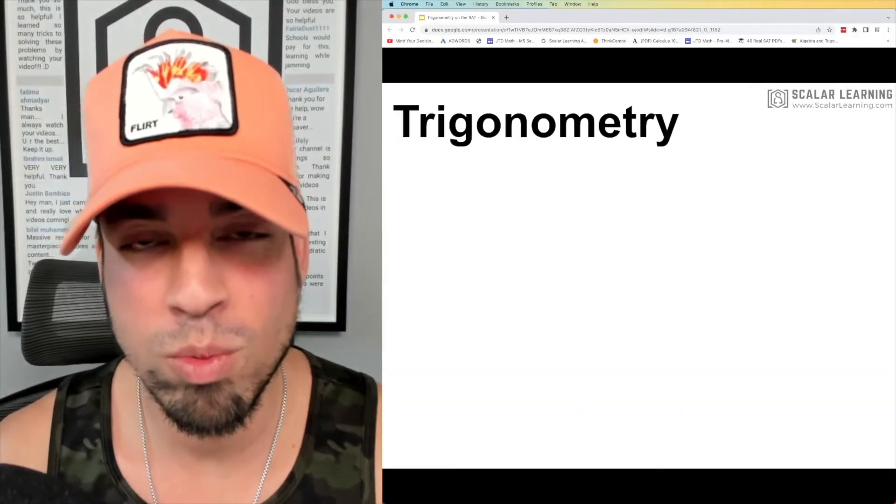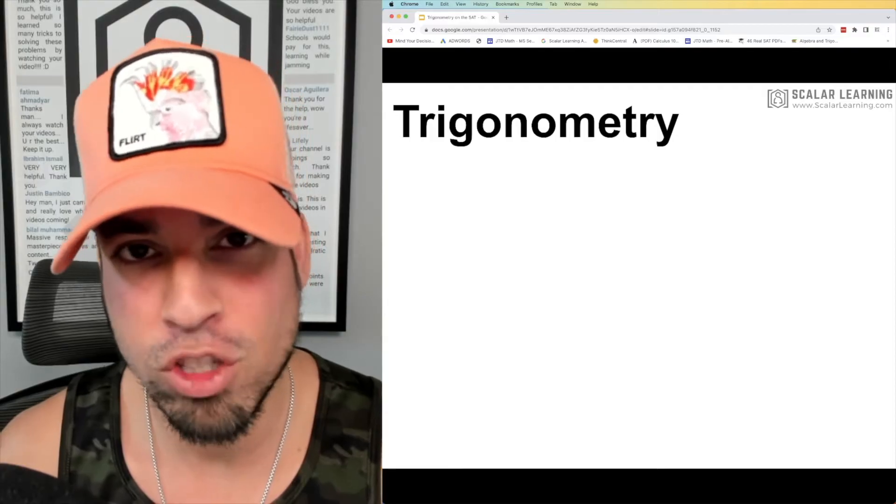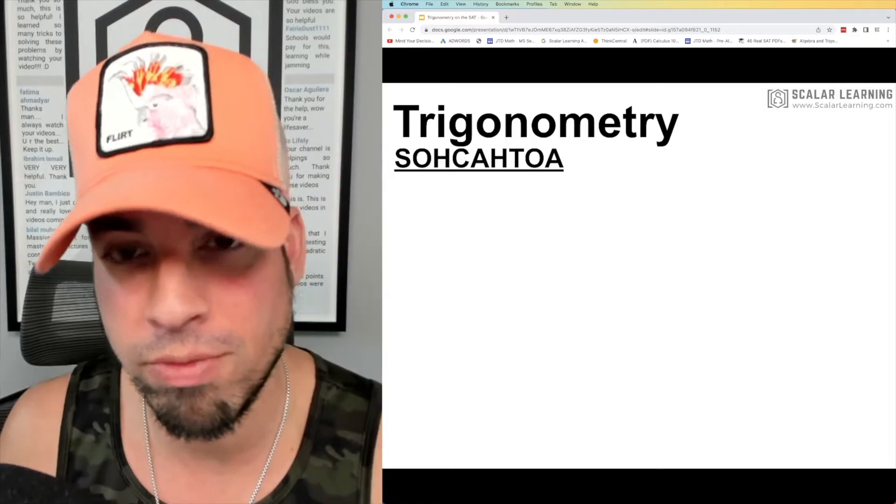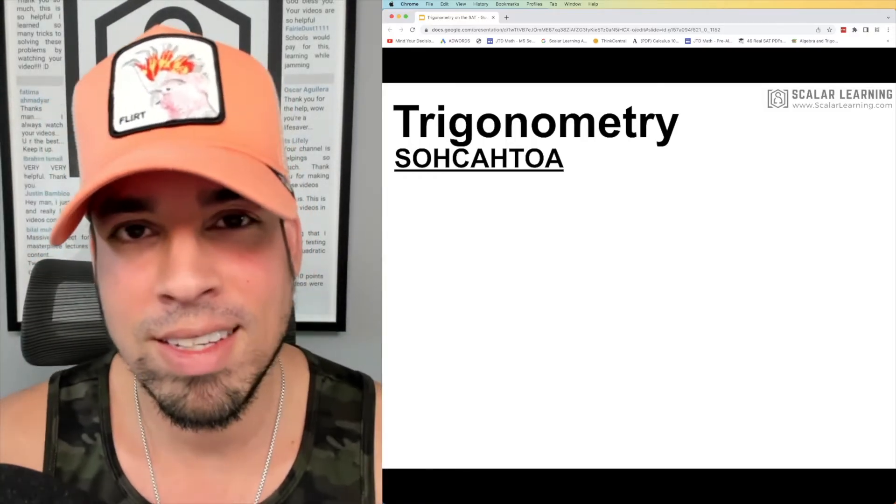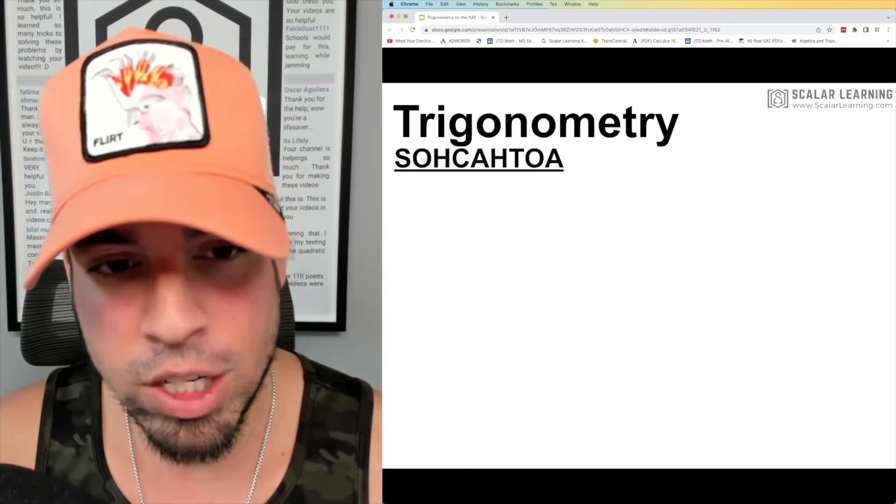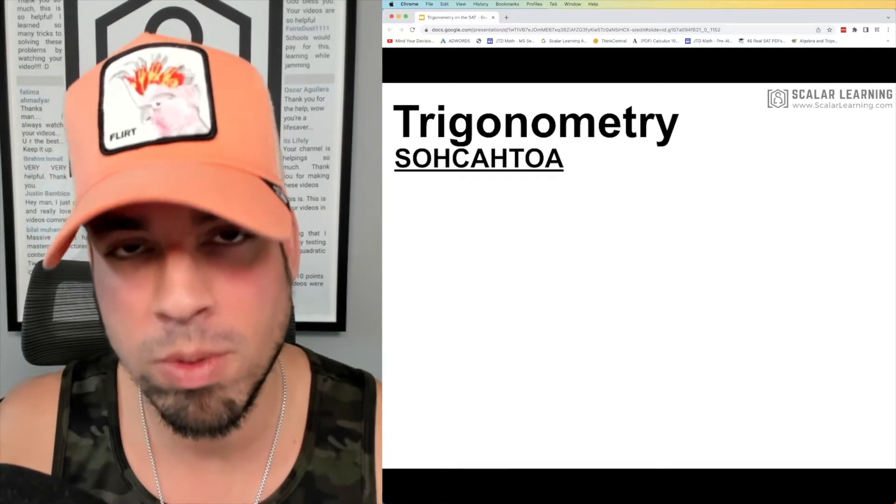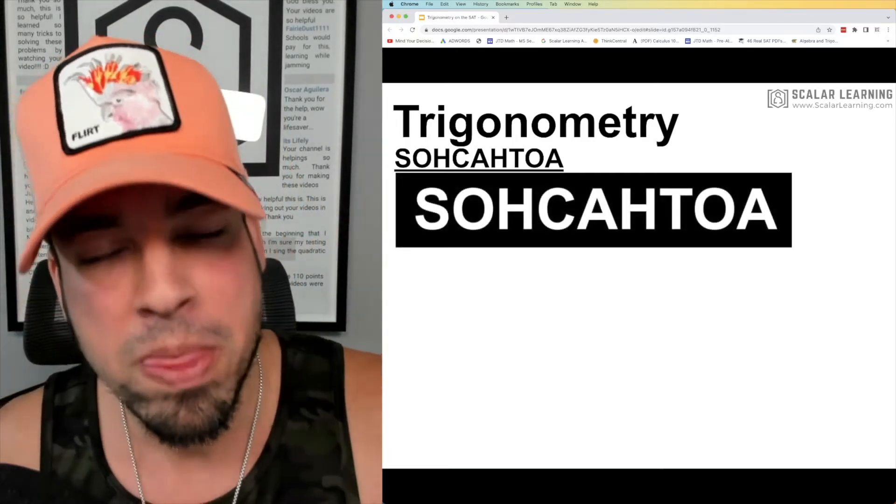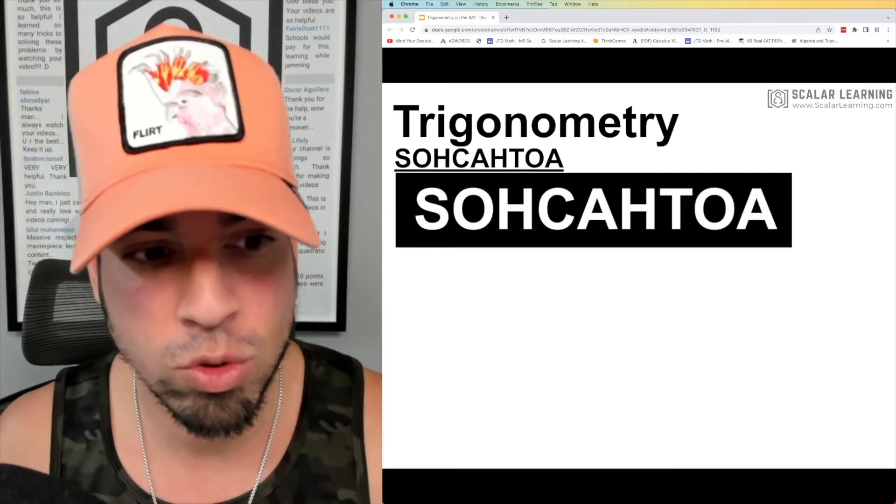The first thing that you gotta know when we're talking about trigonometry is that age-old acronym SOHCAHTOA. So let's break it down: what does SOHCAHTOA exactly mean? What does it refer to? It refers to these side length ratios that are uniform throughout for right triangles.